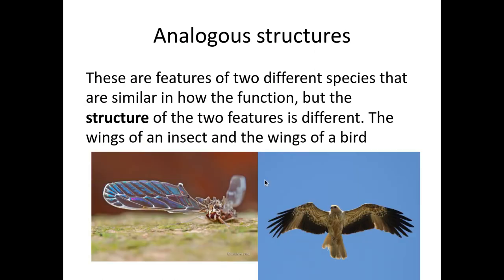The other term is analogous features, and this is where two different species have a similar function, but the structure of them is different. Here you can see the wings of an insect and the wings of a bird — the function is similar in that both allow flight, but the structure is very different between these two organisms.